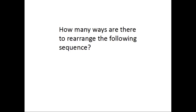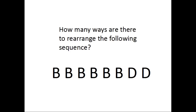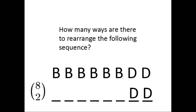Let's take a look at a simple problem. How many ways are there to rearrange the following sequence? We have 6 b's and 2 d's, so we have 8 letters in total. Let's allocate 8 slots for the 8 letters and start by assigning the 2 d's to 2 of the 8 slots. There are 8 choose 2 ways of doing this. The remaining slots must then all be occupied by b's, so there are exactly 8 choose 2 ways of rearranging 6 b's and 2 d's.